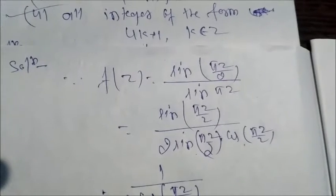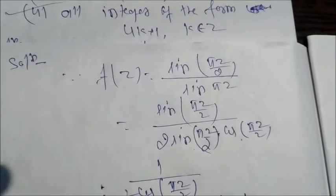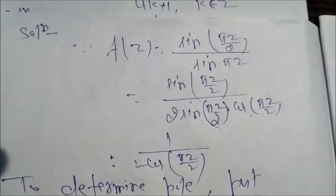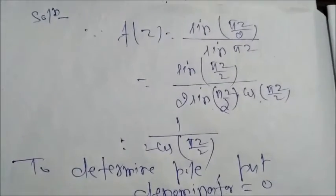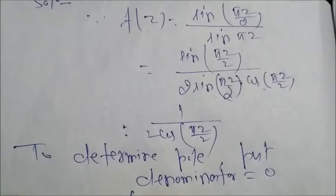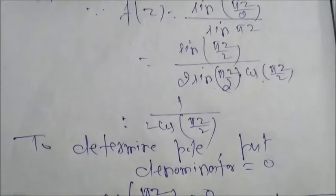So it remains 1 upon 2 cos(πz/2). To determine the pole, put denominator equals to 0. Then we will get cos(πz/2) equals 0.